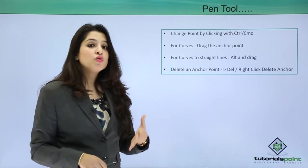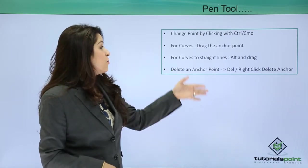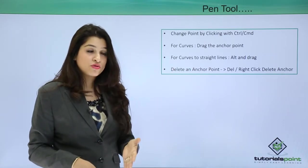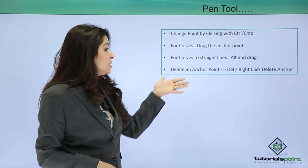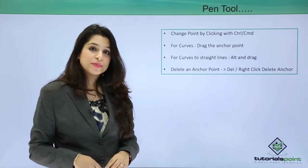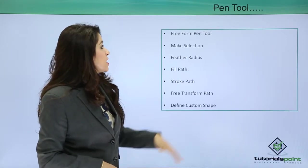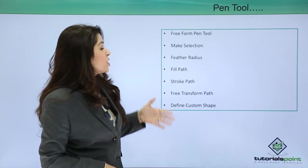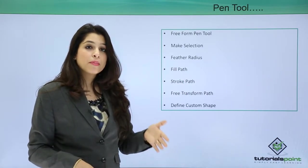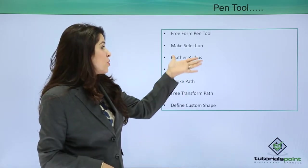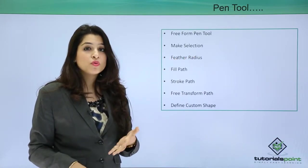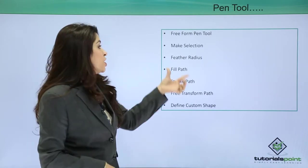For making curves, you can drag these anchor points. To convert curves to straight lines, you can press Alt and drag. You can also delete an anchor point by pressing Delete or right-clicking and choosing Delete Anchor. The pen tool has the following options: the freeform pen tool for freehand selection, and the option to convert any path to a selection.